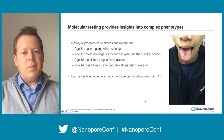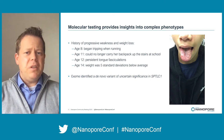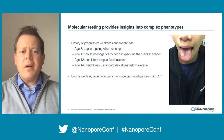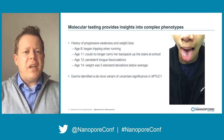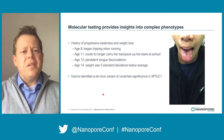You can see here she had a long history of progressive weakness and weight loss that started when she was eight. By the time she was 11 she was so weak she couldn't carry a backpack up the stairs at school, and when she was 12 her friend said how come your tongue shakes when you stick it out, after which she had persistent tongue fasciculations, which you can see here in the video. When I met her, her weight was about five standard deviations below average and her height was in the normal range, and she came to us after an exome had revealed a de novo variant in a gene called SPTLC1.